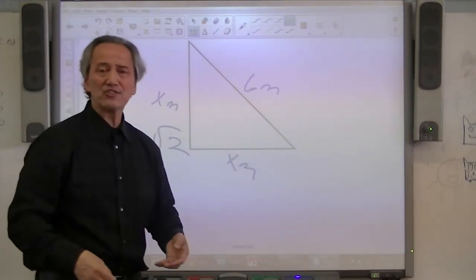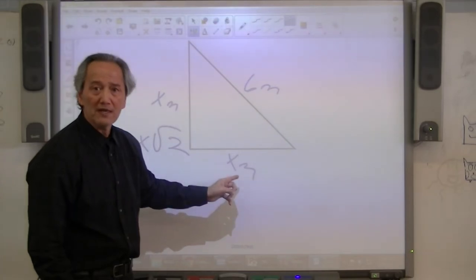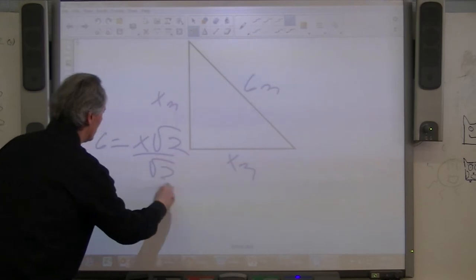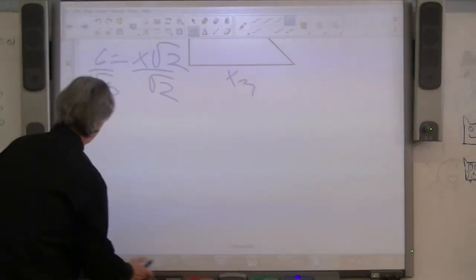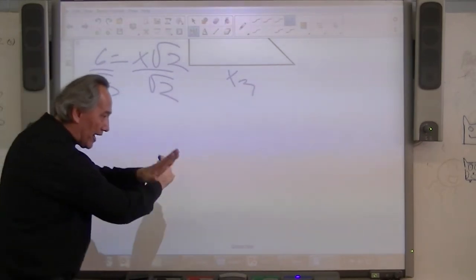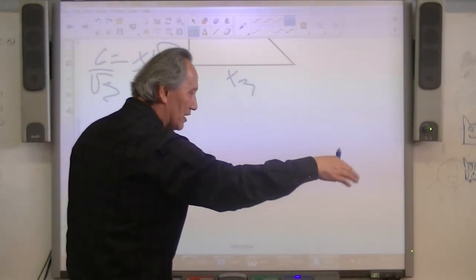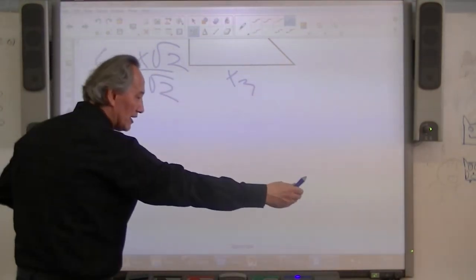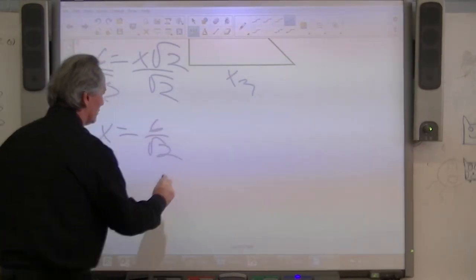Let's isolate the X so we can eventually solve for that and identify what is the value of each one of those legs in terms of meters. So let's divide by the square root of 2 on both sides. I'm going to rearrange this so that the X is on the left and the other quantitative values are on the right hand side. Hence I have X equals 6 over the square root of 2.